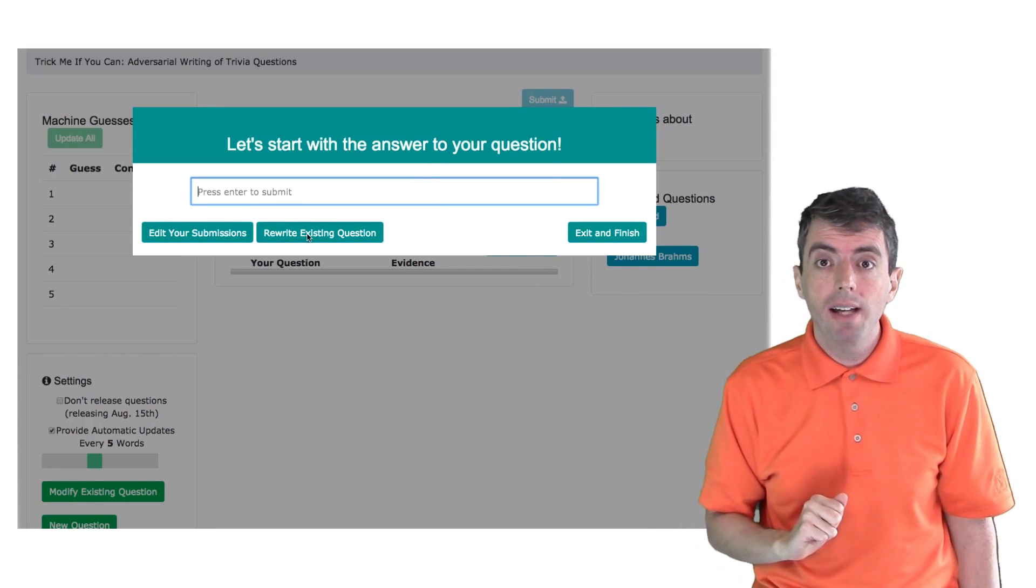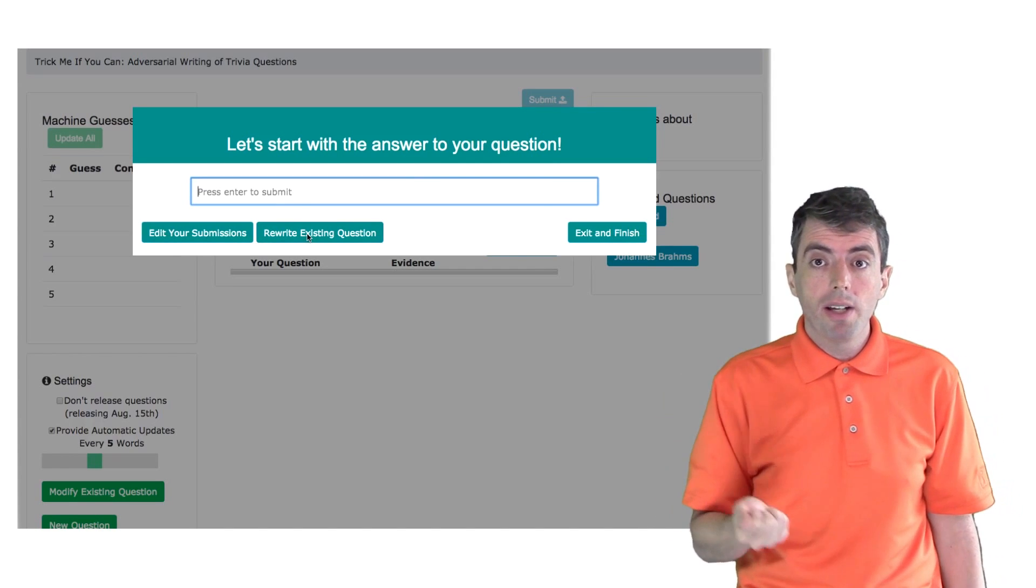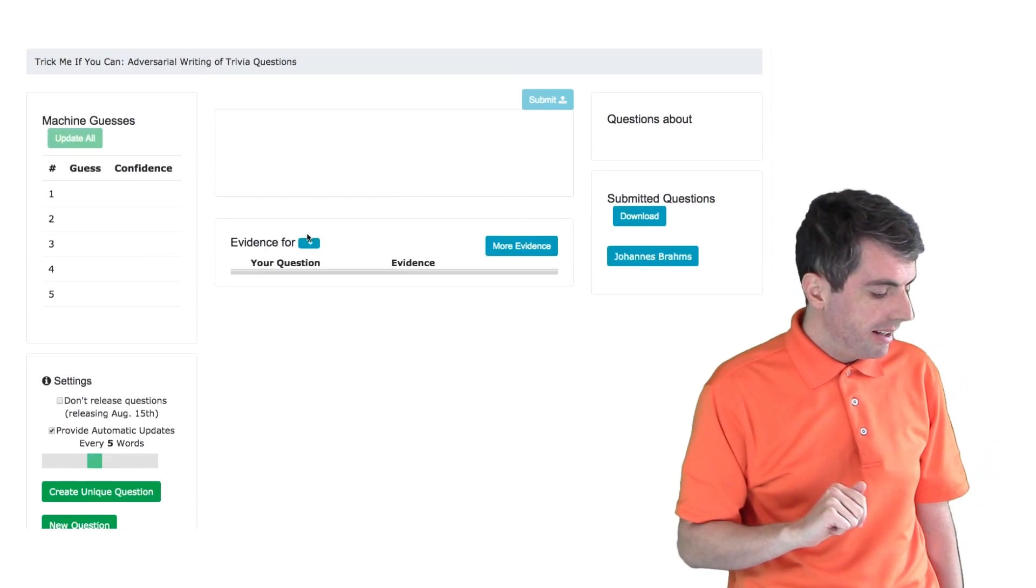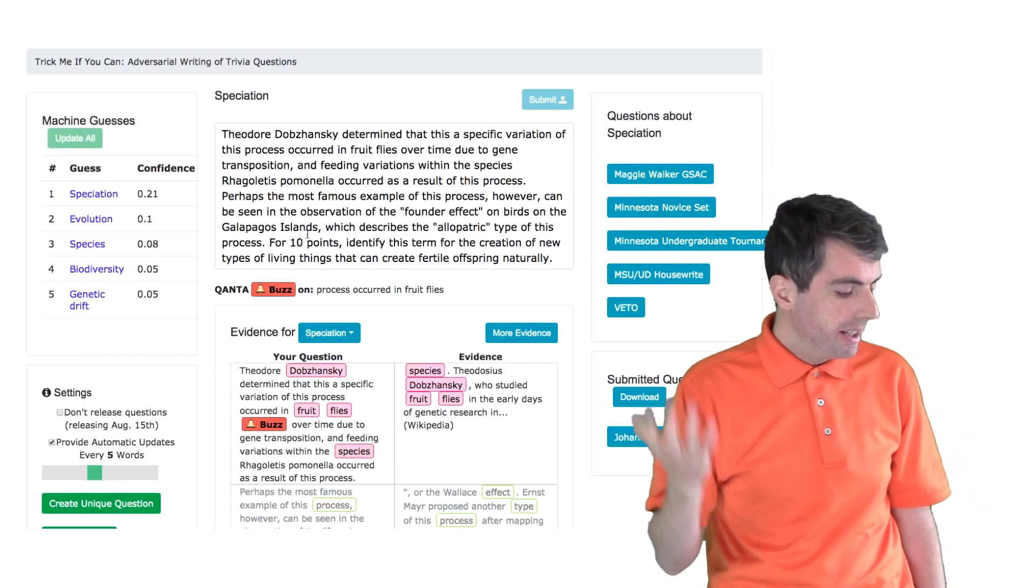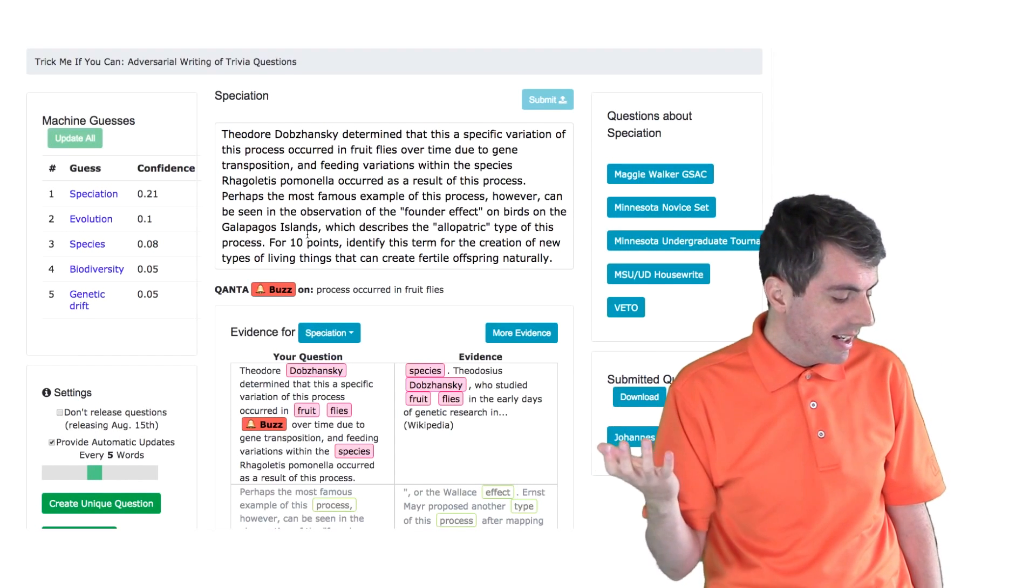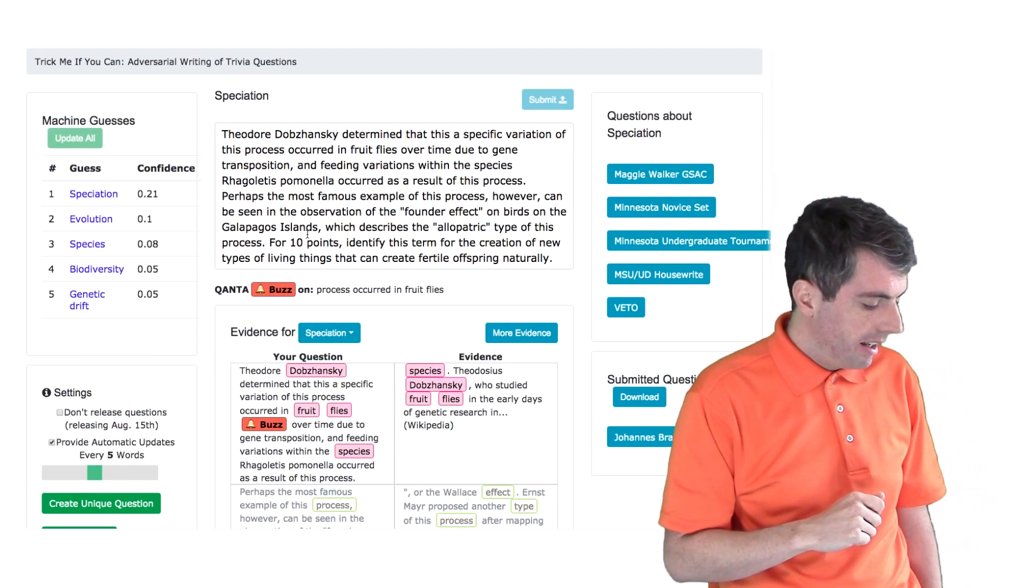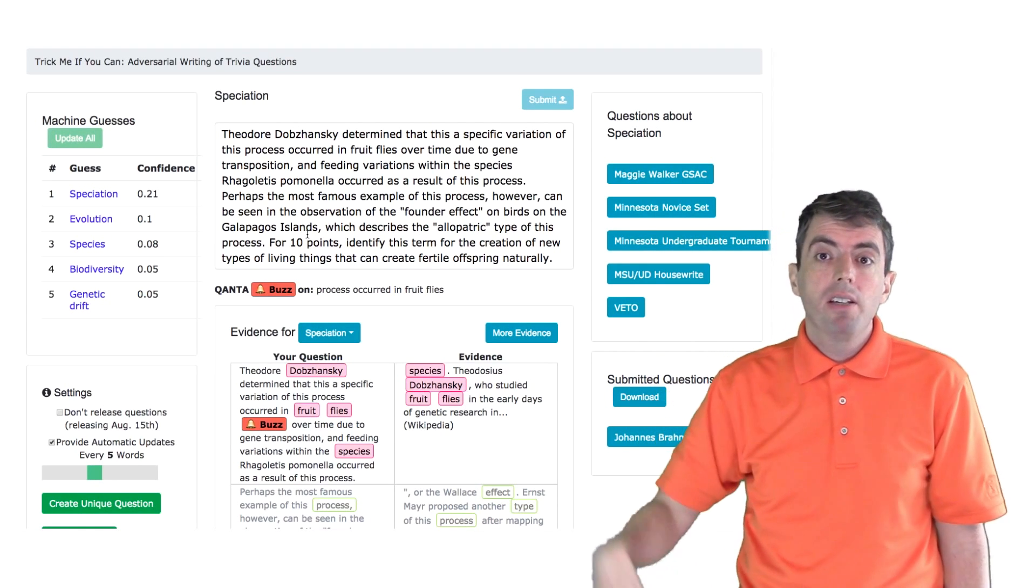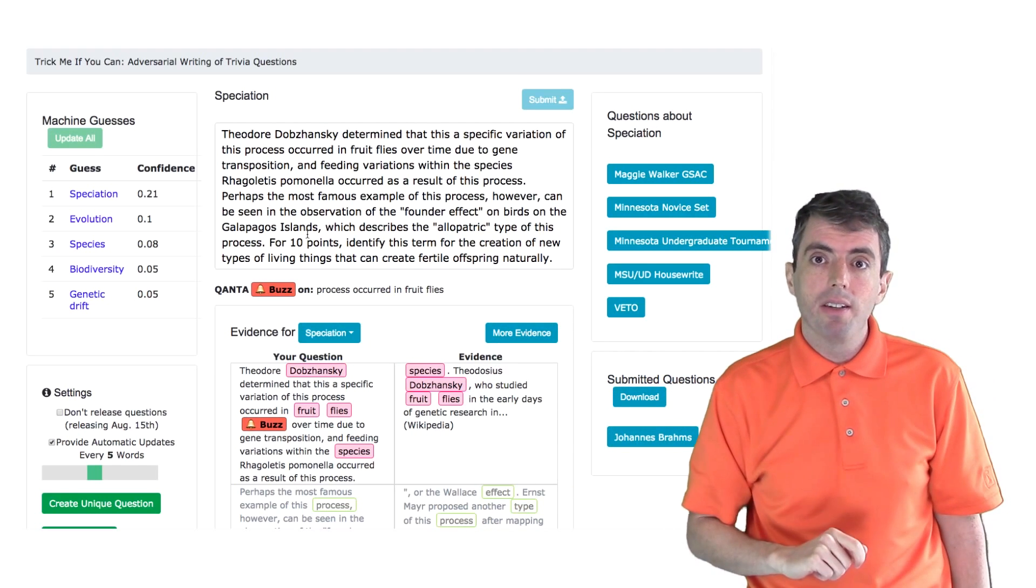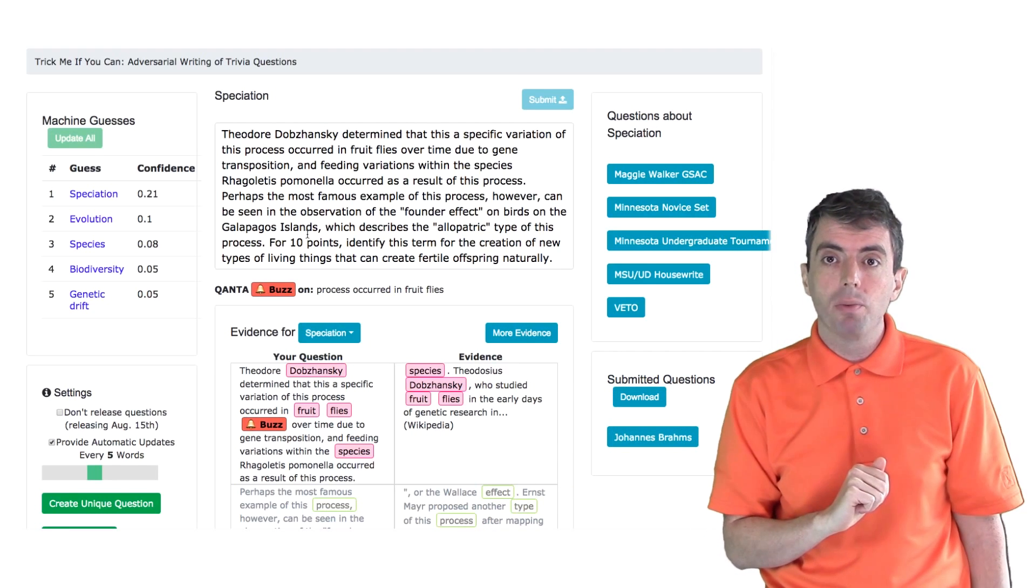If you don't feel like writing a question from scratch, you can also take a question from last year's PACE and rewrite it. And so here we have a question about speciation. And you can see where the system buzzes. If the buzz is too early, you can try rewriting the question to move the buzz later in the question. And then you can submit that as well.